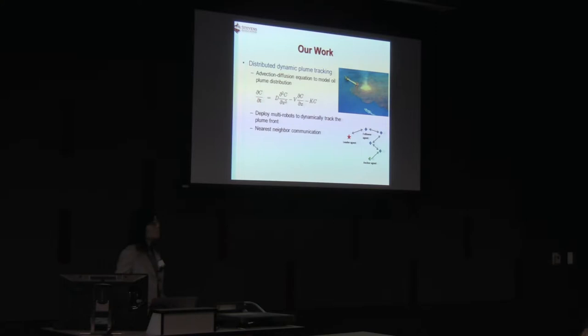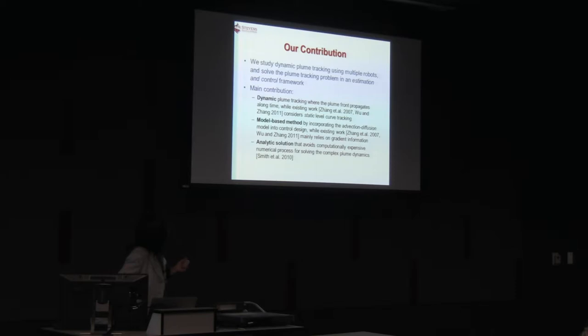Our goal is to deploy multiple robots that are going to track the plume front, right? And the plume front travels slower than the speed of robots, so it's doable. In multiple cases, we don't want to use all-to-all communication. We propose nearest-neighbor communication. We have a leader agent, an anchor agent at the first and last, and all the other follower agents, so it's only neighbor-to-neighbor communication to save the communication cost. We study the dynamic plume tracking problem, and the main contribution, as I said, is we impose this dynamic algorithm. We explicitly consider the advection-diffusion model of the plume model, and our solution is an analytic solution without numerical solutions, so it's real-time implementable.